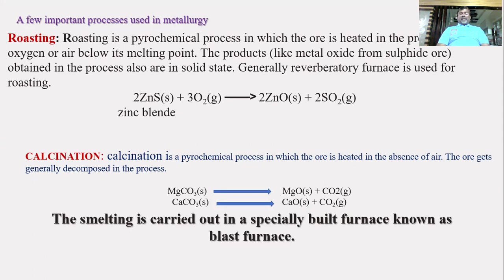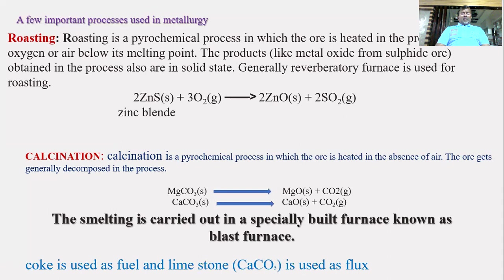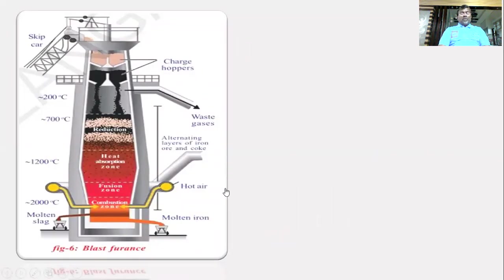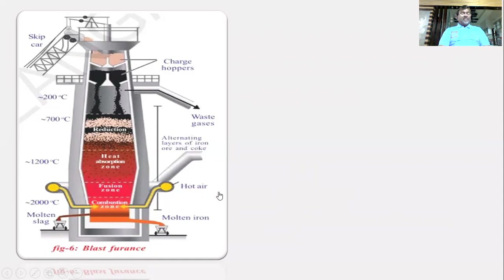Smelting is carried out in specially built furnaces called blast furnaces, using coke as fuel and limestone as flux. This is the block diagram of a blast furnace where calcination, roasting, reduction of ores to metals, and purification are all performed.